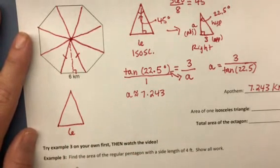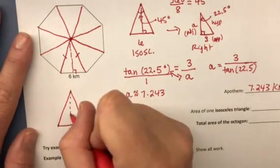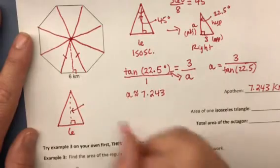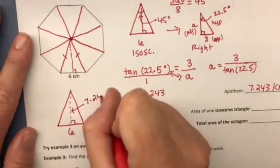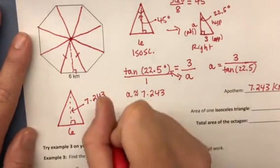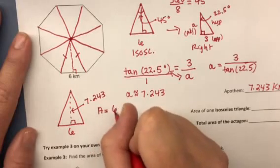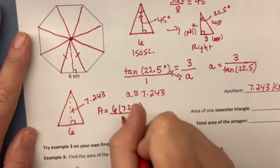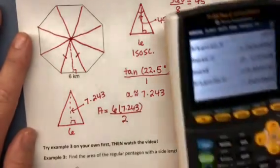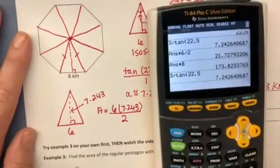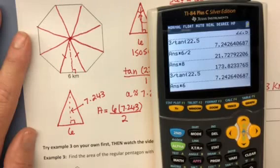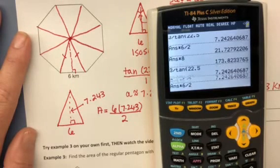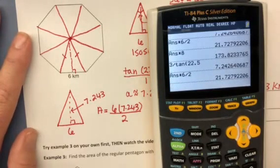We knew the base of the isosceles triangles, they're all six. And we just found the apothem, which is the height of the triangle. And that's 7.243. So if we use area of the triangle, it's base times height divided by two. And I do expect to see your work on these notes so that you know what you're doing.